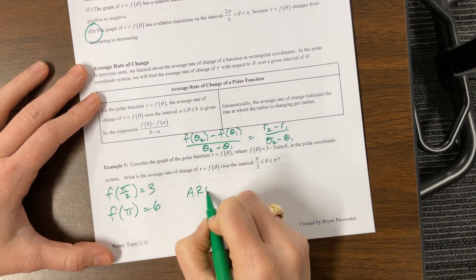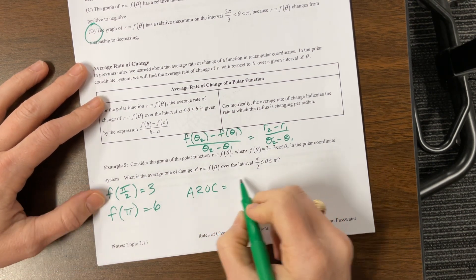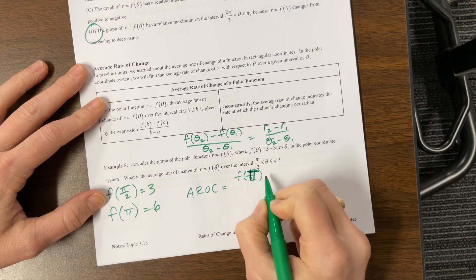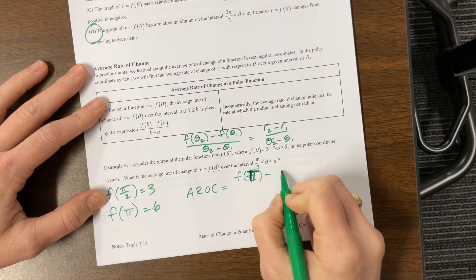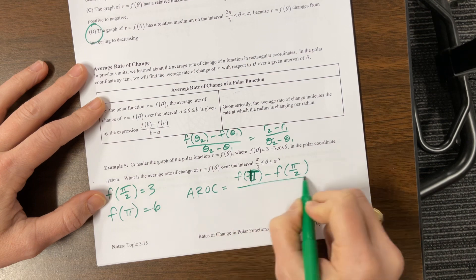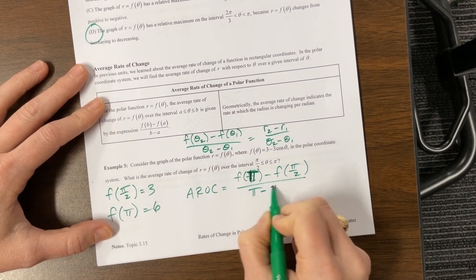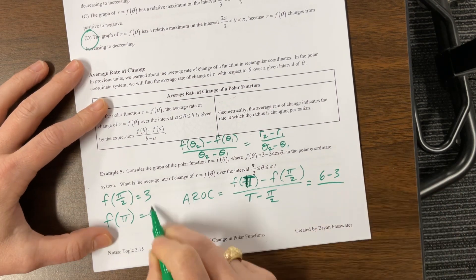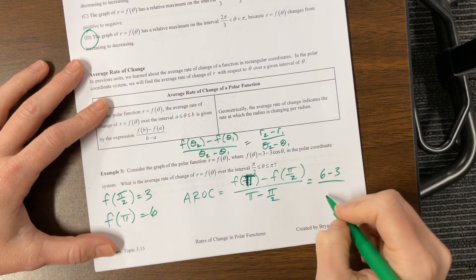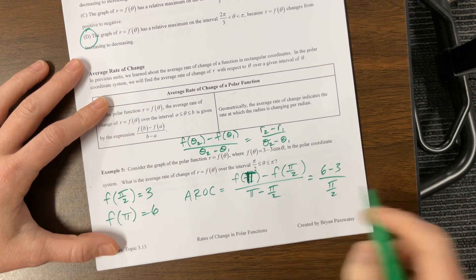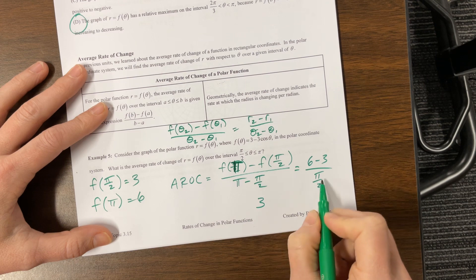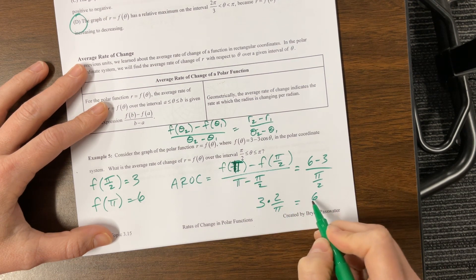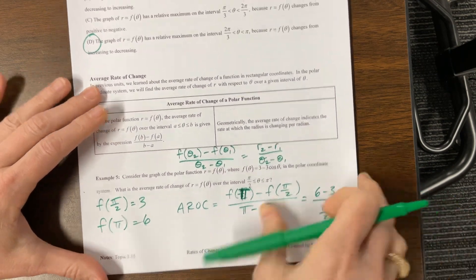Now we're doing our average rate of change equals, I'm going to do f of pi, I just want to deal with positive things. That was a bad attempt at humor. So 6 minus 3 over pi minus pi over 2. 6 minus 3 over pi minus pi over 2 is pi over 2, so we don't leave fractions in a fraction. 3 is being divided by pi over 2, which means we're going to multiply by the reciprocal, and so the answer is 6 over pi.